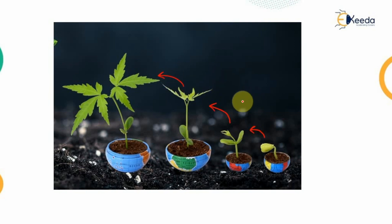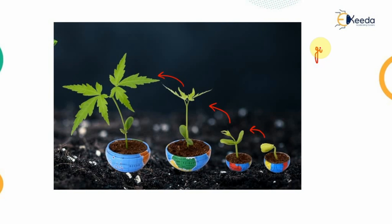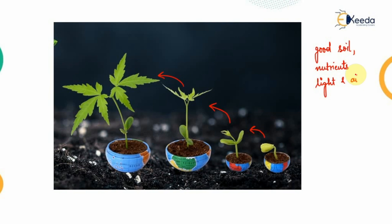To grow like this, the plant or crop will need good soil. In addition to this, the nutrients must be there which are necessary for the growth of the plants, along with light, air, and lastly water.